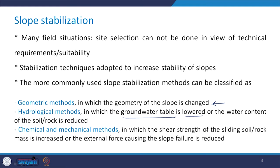The presence of water reduces the strength of the material, so in case this can be altered, it may fall under one of the categories of slope stabilization technique. The third category has chemical and mechanical methods, in which the shear strength of the sliding soil or rock mass is increased, or the external force causing the slope failure is reduced by some means. Basically, these are the three methods which can be commonly adopted for slope stabilization.